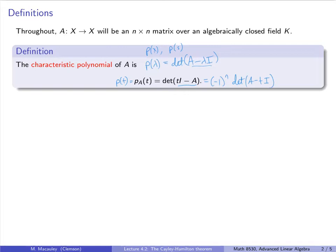In other words, I want this to be T to the n plus something. Whereas if we use the other convention, what we get is negative 1 to the n times T to the n. For example, if we compute the determinant of a 3-by-3 matrix with entries like 1 minus lambda, 3 minus lambda, 4 minus lambda, what you get is negative lambda cubed, and that's not what we want. It's easier if things are monic.